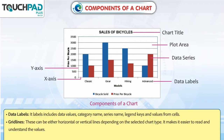Data Labels: Labels include data value, category name, series name, legend keys and values from cells.